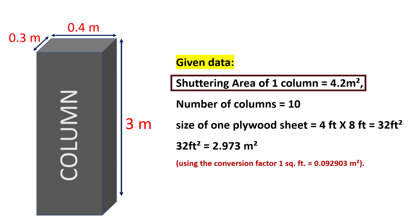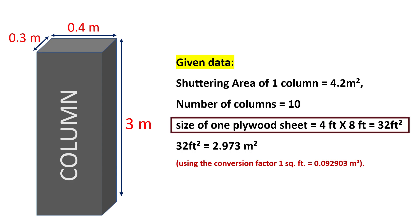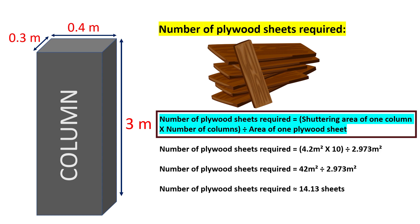We have the given data: the shuttering area of 1 column is 4.2 square meters and the number of columns is 10. We know the size of 1 plywood sheet is 4 feet by 8 feet, which equals 32 square feet, approximately 2.973 square meters, using the conversion factor 1 square foot = 0.092 square meters. The number of plywood sheets required = (shuttering area of 1 column × number of columns) ÷ area of 1 plywood sheet. Shuttering area of 1 column is 4.2 square meters, the number of columns is 10, and the area of 1 plywood sheet is 2.973 square meters.